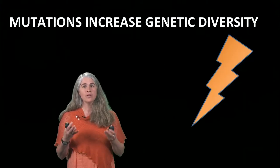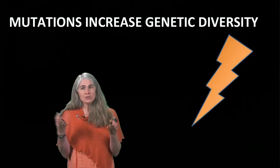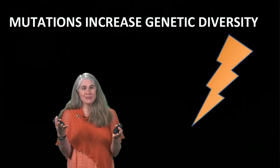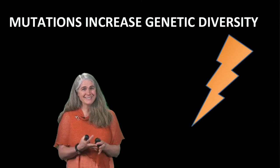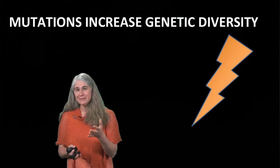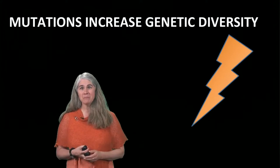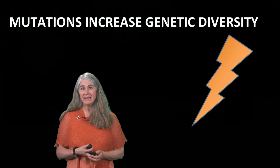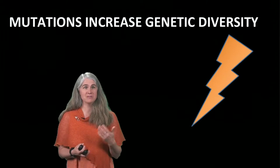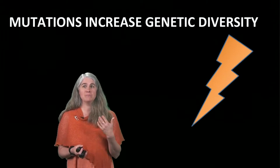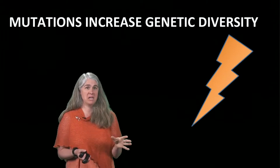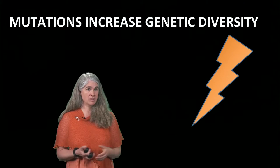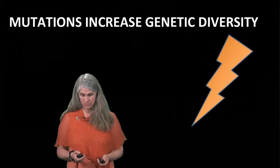So what do plant breeders do if the variation they want doesn't exist? Starting in the 1950s, they might try to create it using things known to mutate DNA, like X-rays, gamma rays, or certain chemicals.